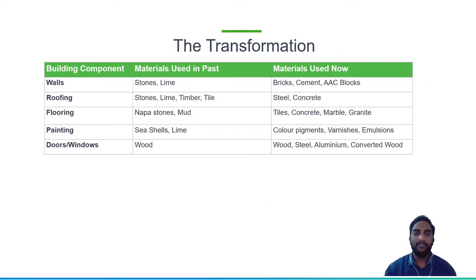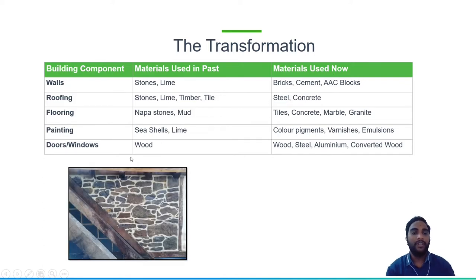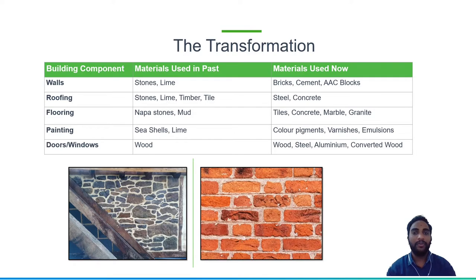Considering the transformation of building materials since ages to now, if you take a wall, they used to have stone and lime as major building materials. But now we use various bricks, cement, and different types of lightweight blocks or cement blocks. AAC stands for Autoclaved Aerated Concrete blocks — those are lightweight blocks. In the olden days, stone and lime were the basic building materials for wall construction, whereas now we use bricks or cement.